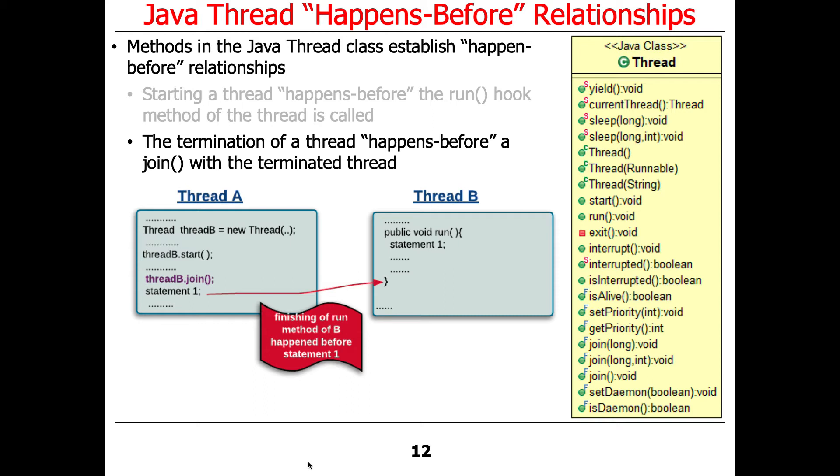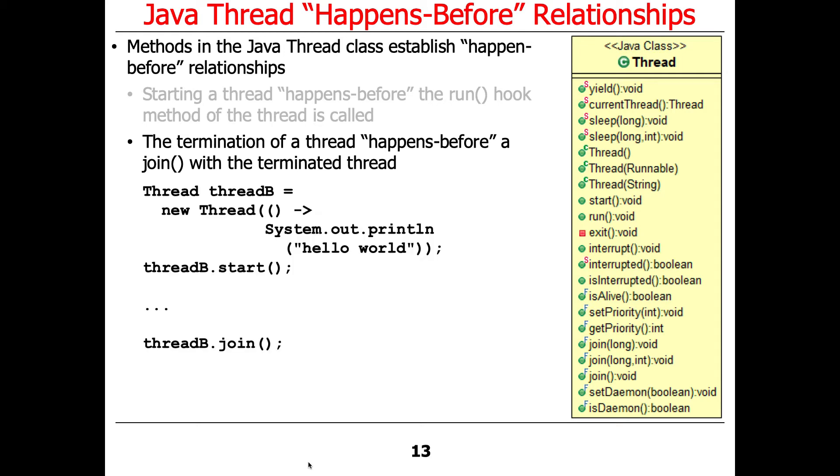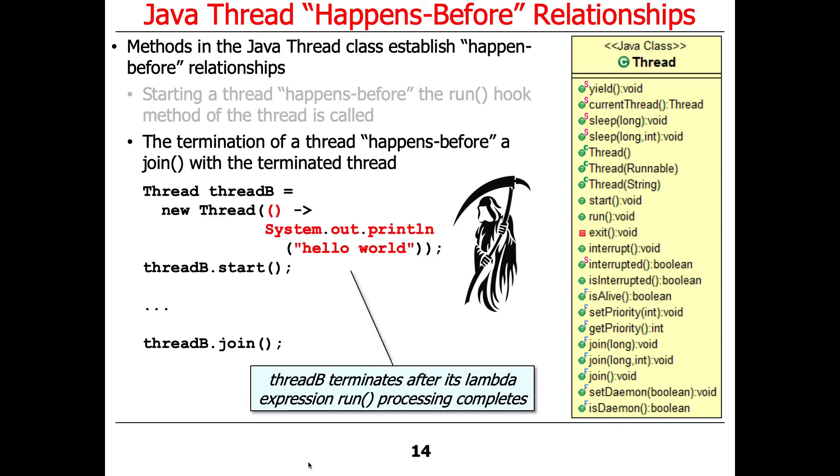When join is called, it will see the updated state that thread B may have made on shared mutable state within that process. Here's an example. Again, we go ahead and spawn a thread, we print something out, and after it prints out hello world, thread B is going to terminate after run falls off the end.